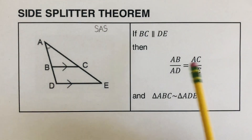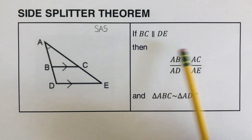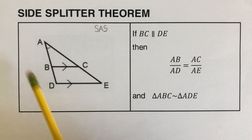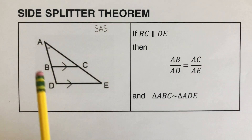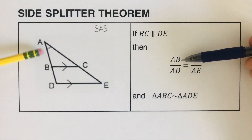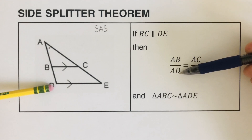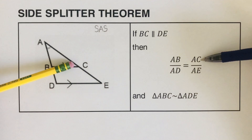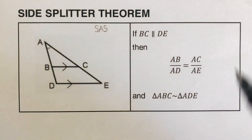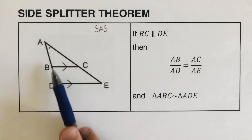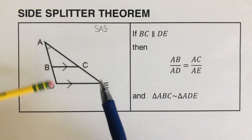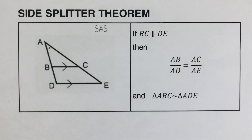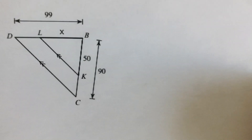Be sure that when we set up the fraction, we don't randomly pair them up. The pattern is the first part over the whole thing — for example, AC over the whole side length. Please do not randomly pick numbers and put them in the fraction; it's not going to work that way.